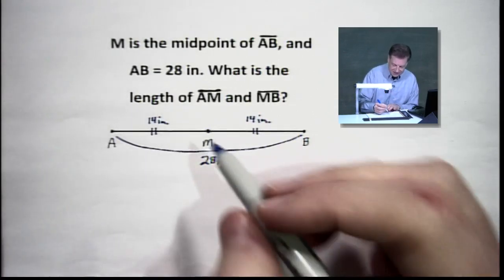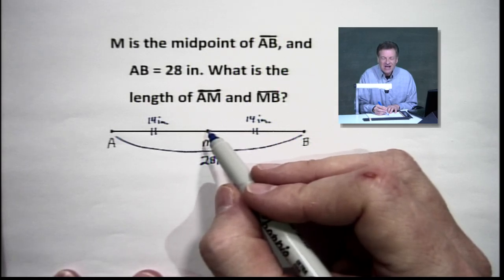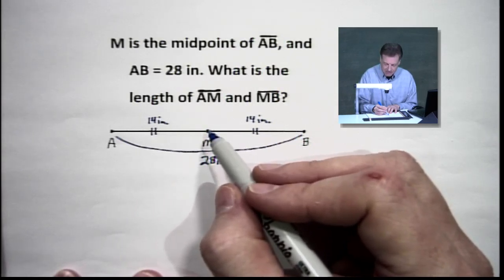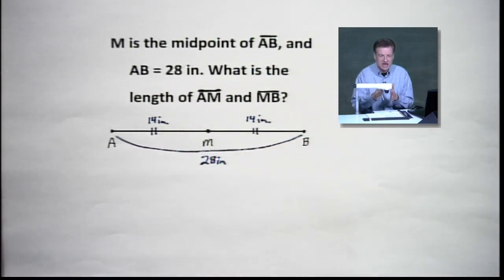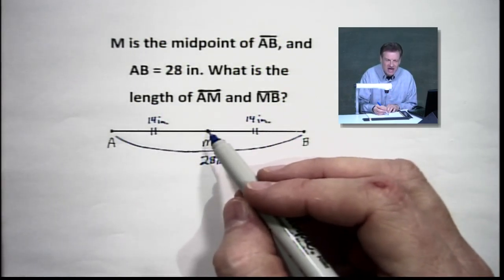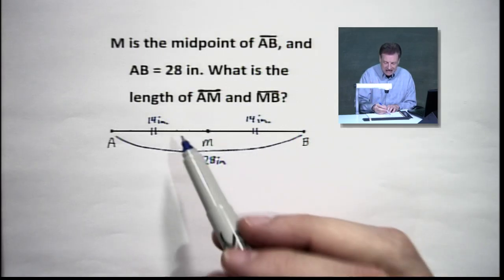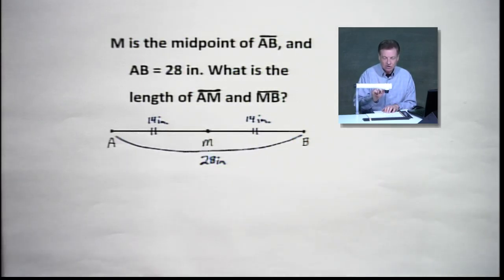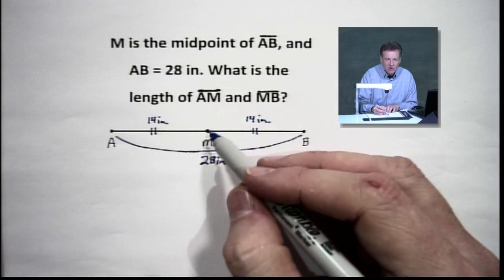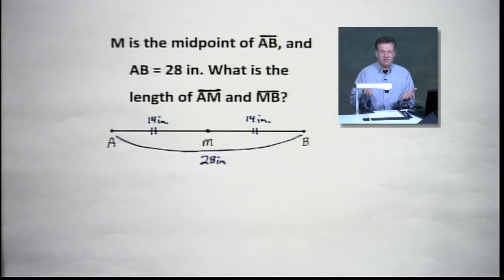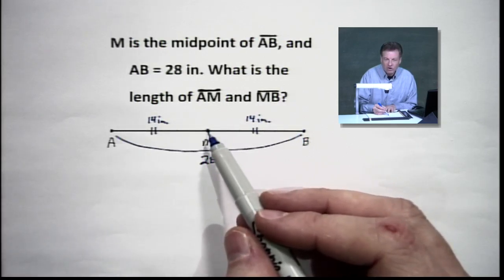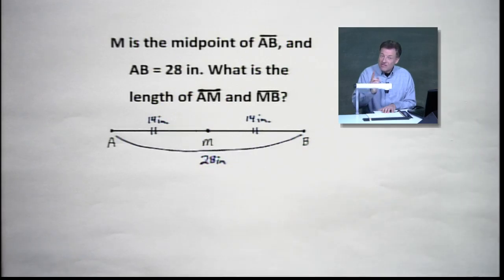Now let me talk about a bisector. I have a midpoint, but a bisector is anything that will pass through a midpoint. It doesn't have to come in perpendicular — it can come in at all sorts of angles — but if it passes through that midpoint, it's a bisector. It cuts that segment into two congruent pieces. A line segment, a ray, even a plane could do it. The main idea is it's got to go through that midpoint in order to be a bisector.